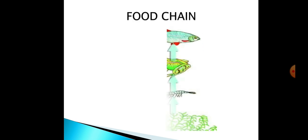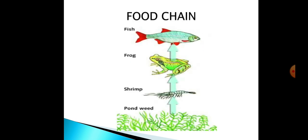Here is an example of a food chain in pond water: shrimp feeds on pond weeds, making it a herbivore; then shrimp is eaten by a frog; and the frog is eaten by a fish. This follows the same pattern as other habitats — herbivores eat plants, and then carnivores eat herbivores, and larger carnivores eat smaller carnivores.